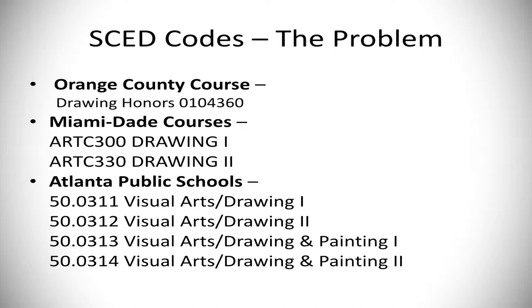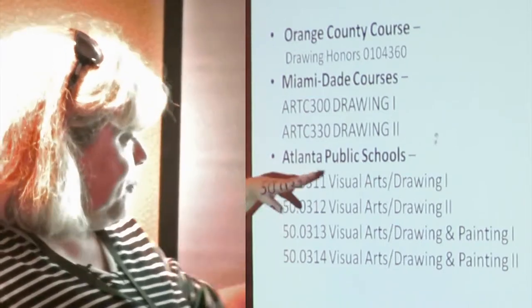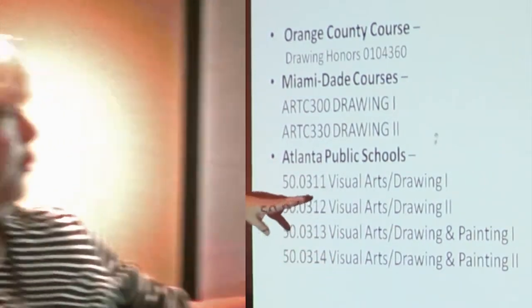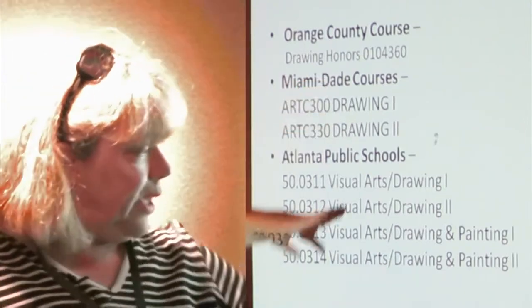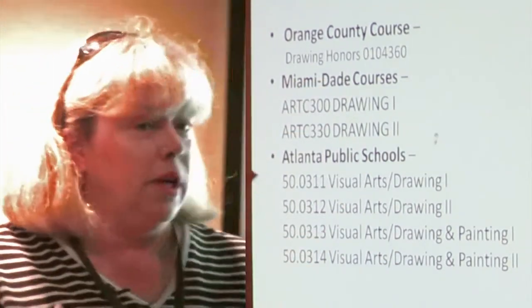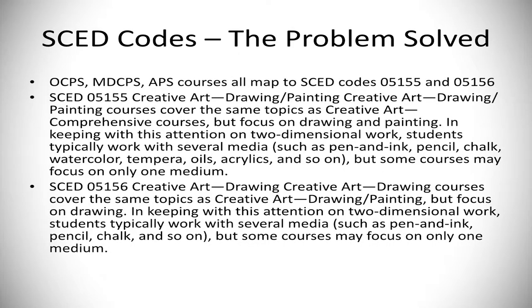For example, here's the perfect problem. In Orange County, they offer a course called Drawing Honors, course code 0104360. In Miami-Dade, they offer Drawing 1 and Drawing 2 with different course codes. In Atlanta Public Schools in Georgia, there are courses for drawing and drawing and painting. So we've got drawing in common but very different codes and different names across all these districts.